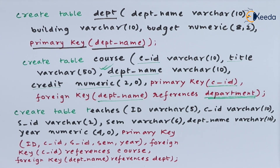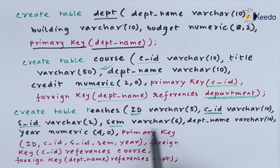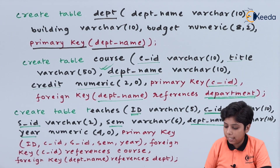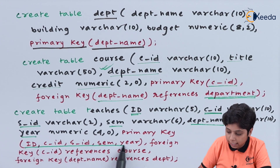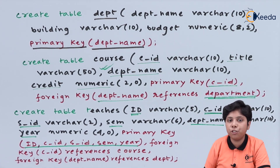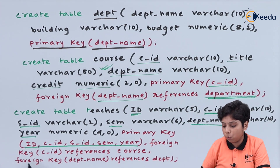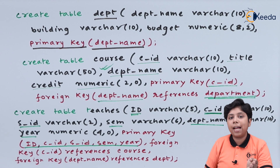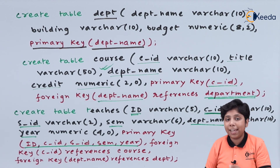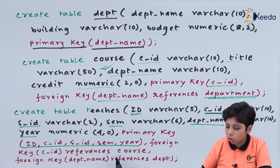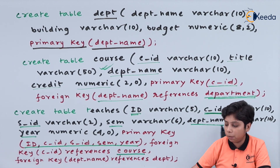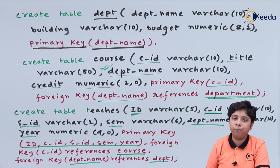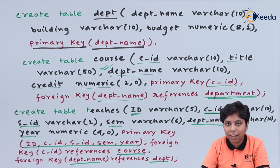We are now creating a relation 'teachers' which has ID, CID, SID, SEM, YEAR, and department name. The primary key is a combination of ID, CID, SID, SEM, and YEAR. The foreign key CID references the course relation, and a primary key that is referenced from another relation can also be part of a composite primary key here. The department name is referenced from the department relation. In this way, we can add more than one referential integrity constraint while designing a schema.